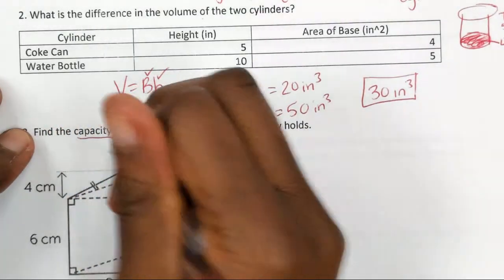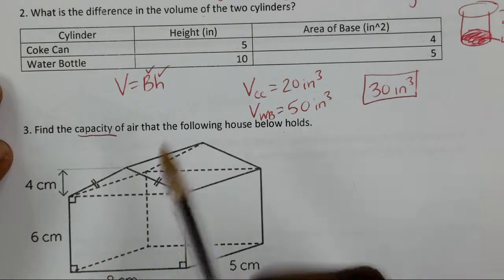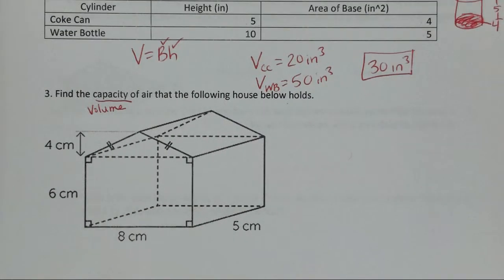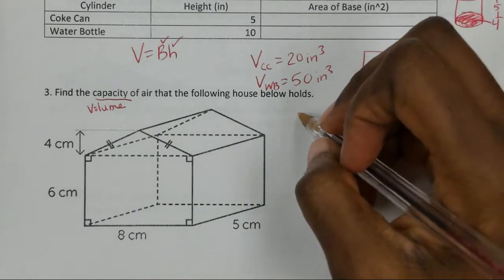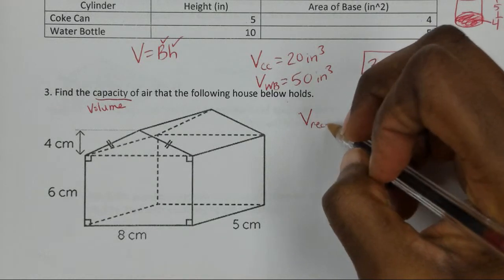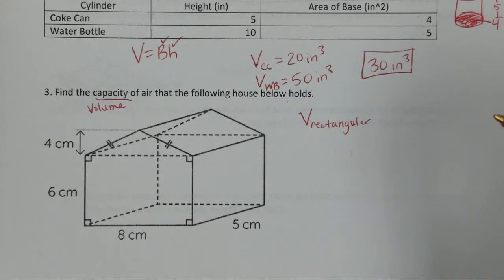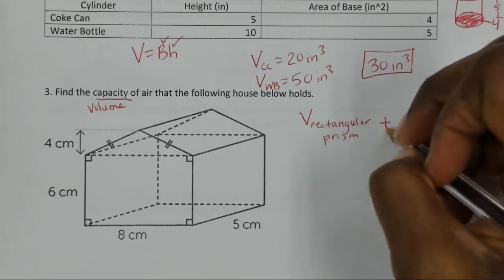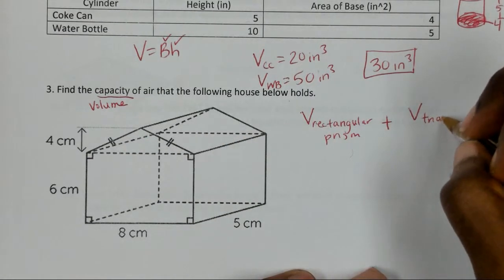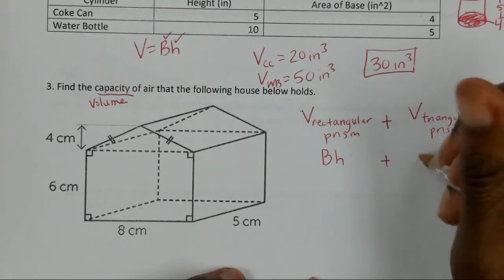Find the capacity of air in the house below. Capacity is just another word for volume — how much space is the air occupying? You should recognize there are two different volumes here, so instead of a composite area, we're doing a composite volume: the volume of the rectangular prism plus the volume of the triangular prism on top. They're both prisms, so the formula is capital B times H for both.